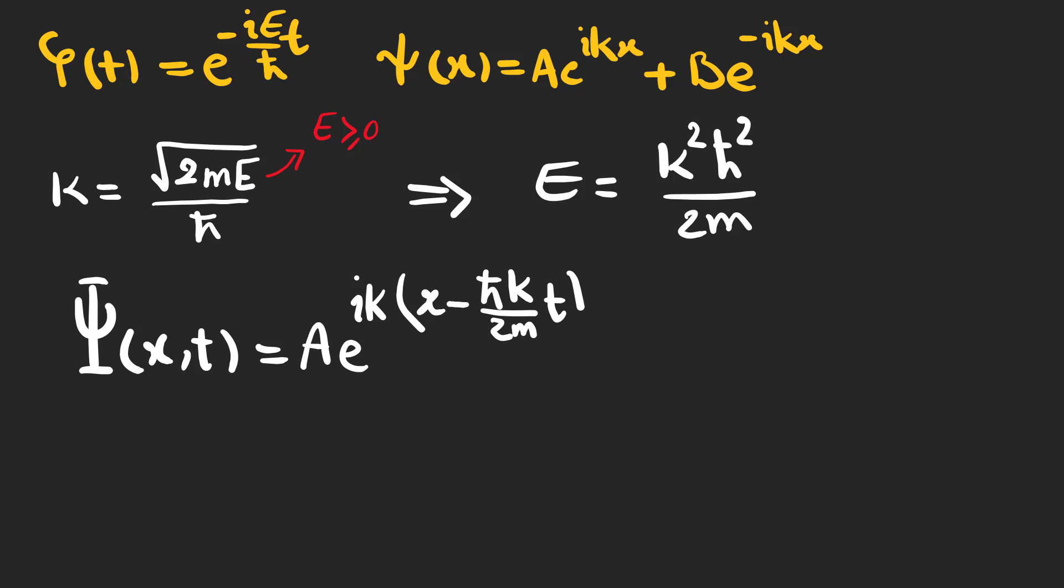Now let's add the time dependence and write the wave function at x at time t. This kind of function can be represented as a spiraling wave at time t. Let's choose a fixed point on this spiral.